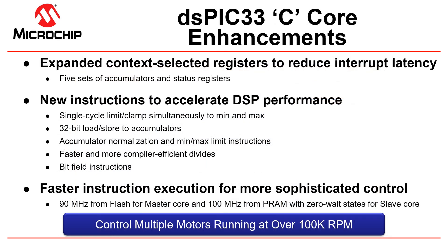The dual core family with DSPIC 33C cores offers extended functionality over the previous generation of DSPICs. There are now five sets of status and accumulator registers that facilitate faster interrupt switching, selected in hardware based on the interrupt priority level of the core. This reduces the time required for getting into and out of an interrupt service routine, reducing overall switching latency, and enabling compensator routines to achieve 50 percent faster execution.